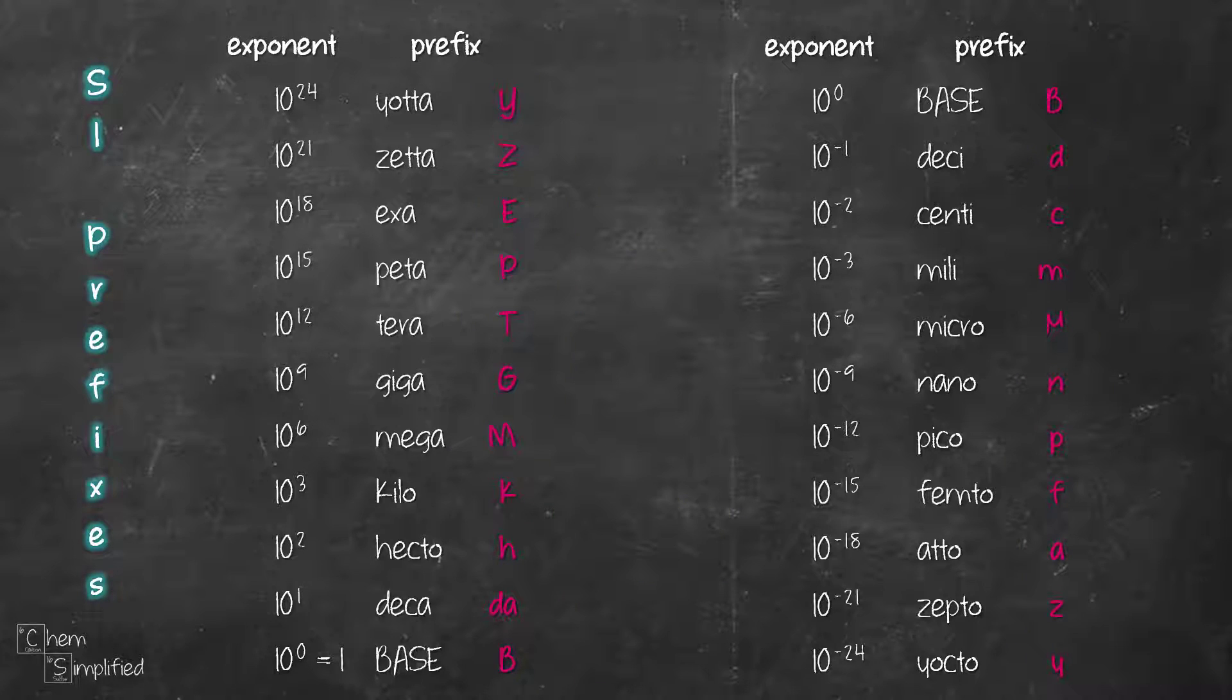Each of these prefixes has a special value. For Yoda, its value is 10 to the power of 24. That means it's 1 followed by 24 zeros. And as we go from Yoda to Yocto, the value gets smaller and smaller all the way to 10 to the power of negative 24.